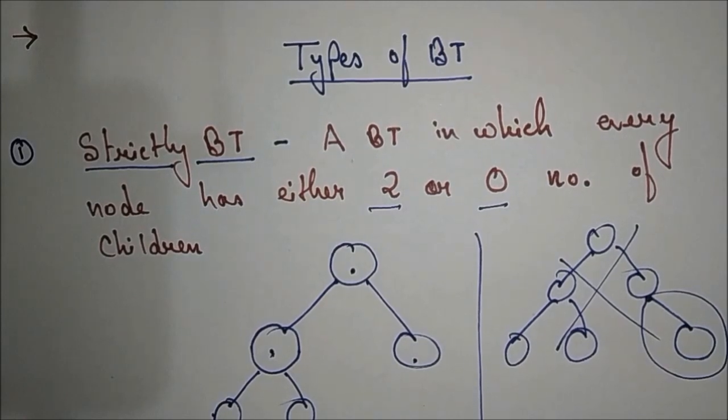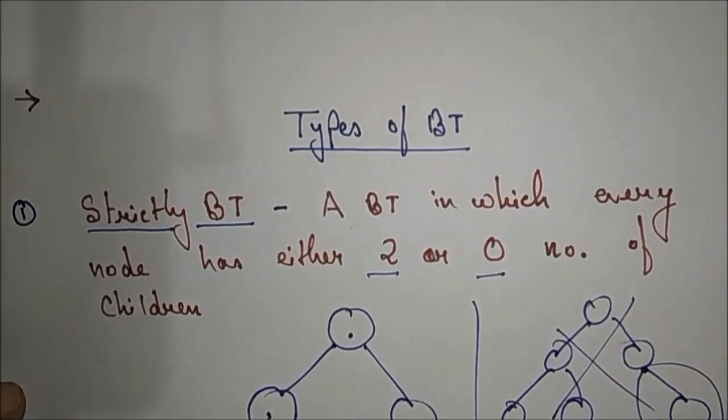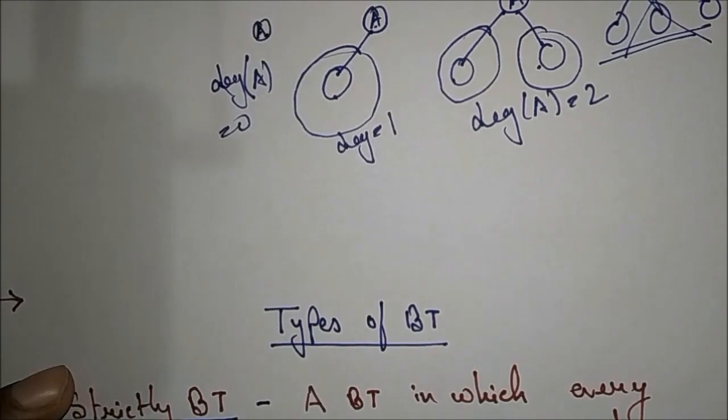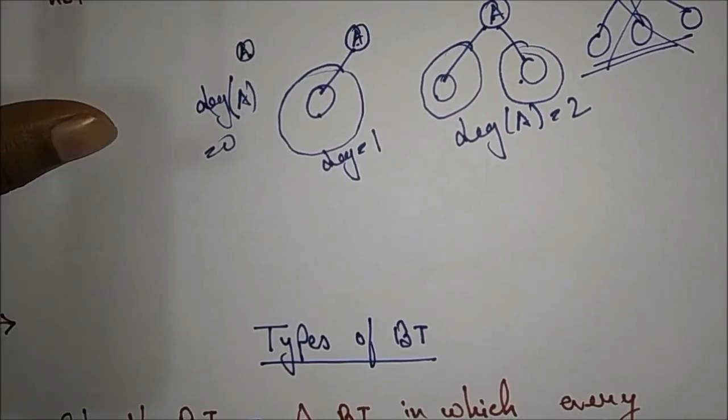The another name of strictly binary is full binary tree — it is also called full binary tree.